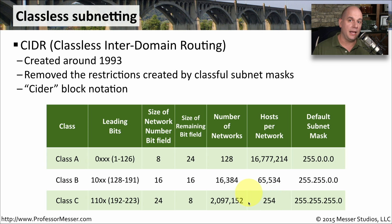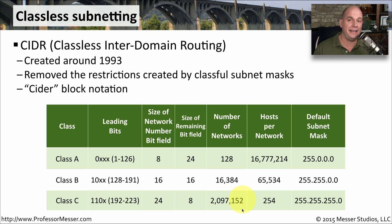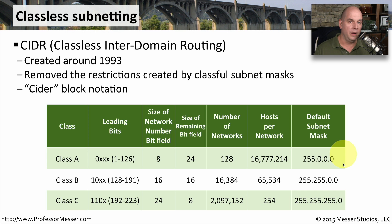As you can see with this class-based system, there were some pretty dramatic differences between those three. There were no in-betweens — you could either choose A, B, or C, and that was it. That was one of the biggest reasons we went to a classless subnetting system, so that we could really define the network for the proper sizes that was right for us. This also meant that we were conserving IP addresses, which of course is important with IP version 4.